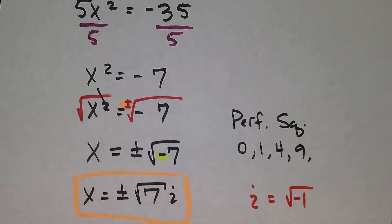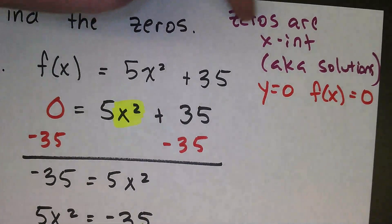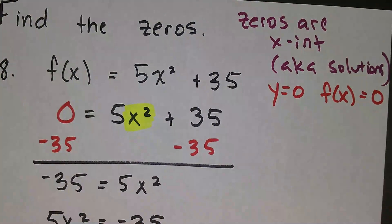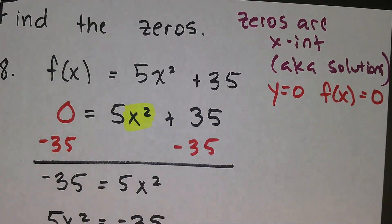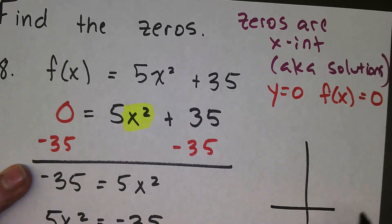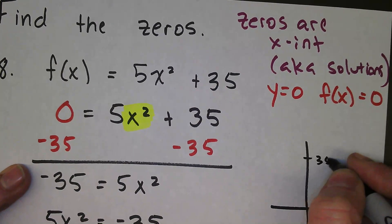It is a complex solution, which means there are no real x-intercepts. This would not cross the x-axis. If I tried to graph this, I can tell you exactly where it's going to be because the y-intercept is 35. I can tell by looking at that. So the y-intercept is up at 35.